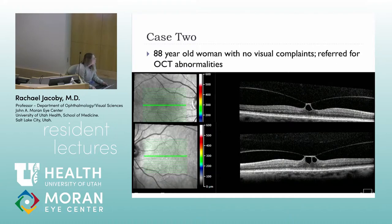That's about it for CNVMs. The last thing to keep in mind is idiopathic CNVMs — a lot of these have probably had some sort of inflammatory disease, maybe a subtle PIC or multifocal choroiditis. Moving on to vitreo-macular traction syndrome.